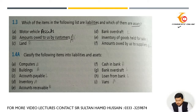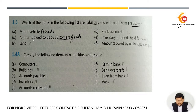When you sell something to a customer on account or on credit and they say they will pay you later, that is known as amount owed to us by a customer, and that comes under assets.